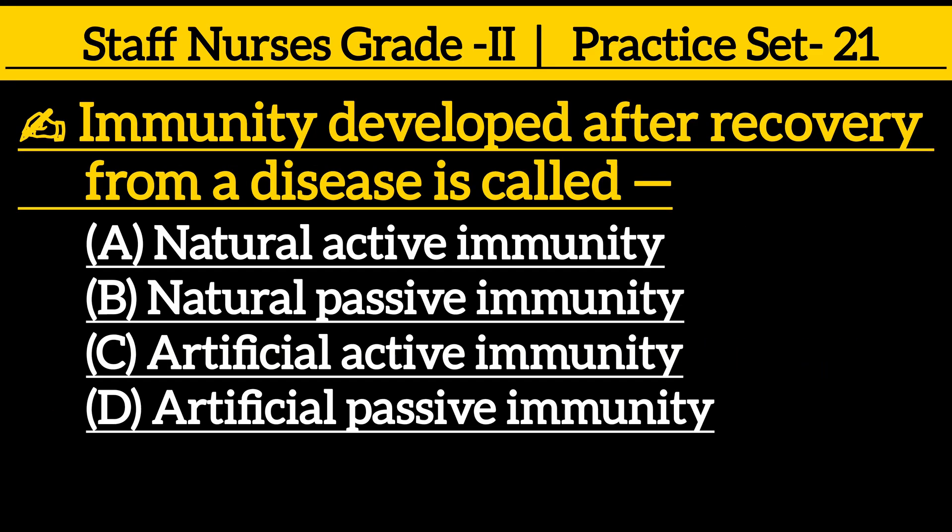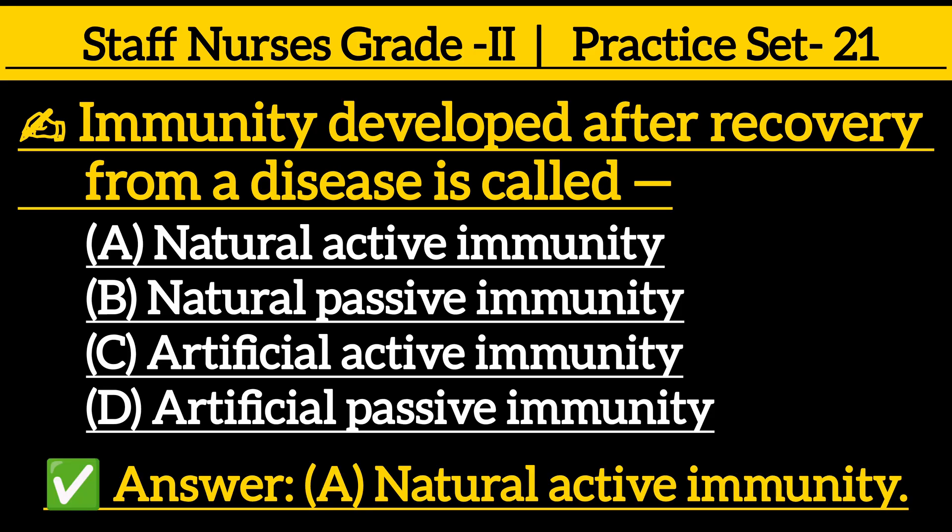Immunity developed after recovery from a disease is called: Option A, natural active immunity; Option B, natural passive immunity; Option C, artificial active immunity; Option D, artificial passive immunity. Correct answer is Option A, natural active immunity.